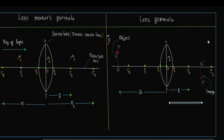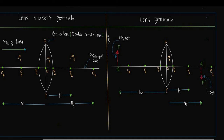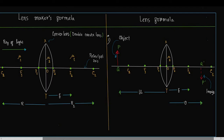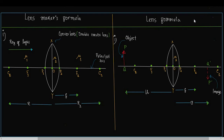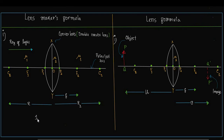We can denote v as the image distance. On the left-hand side we can write the Lensmakers Formula, which is 1/f = (mu − 1)(1/R1 − 1/R2), where mu is the relative refractive index of the lens with respect to the surrounding medium.